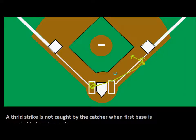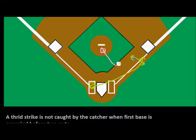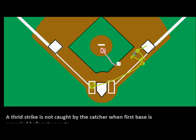So if a ball is hit here and the catcher or pitcher runs over and gets it, the batter knows the ball is going to be coming from this angle. He might veer in here and touch the base that way, and then he could be called out for trying to block the throw.